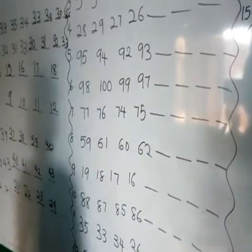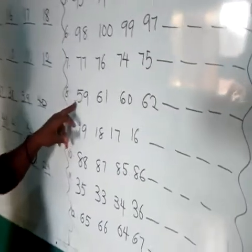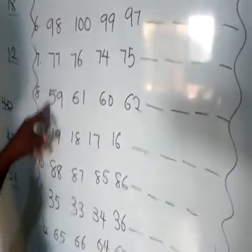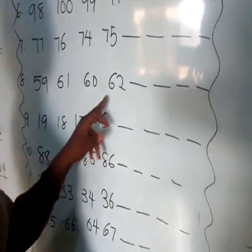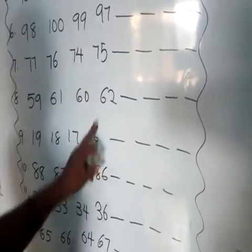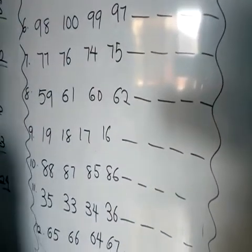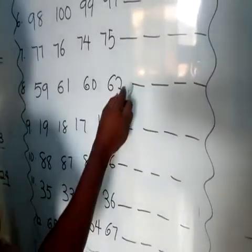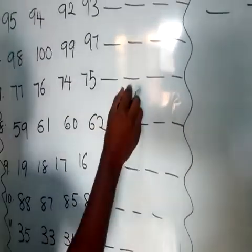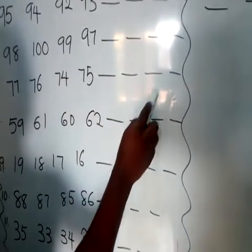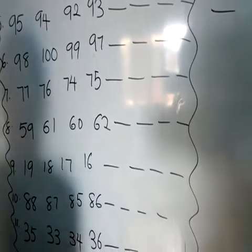Number 8: we have 59, 61, 60, and 62. Which number comes first? We have 60 as our first number. Let's go: 60, 61, 62, and the last one is 68.